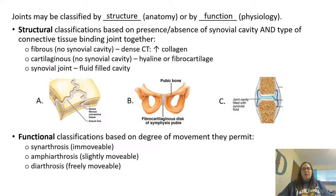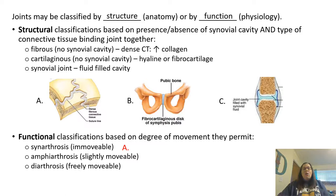Functional classifications are based on the degree of movement they permit. A synarthrosis joint is immovable — a fibrous joint tightly packed together is a synarthrosis. An amphiarthrosis joint is slightly movable, and the example would be the cartilaginous joint, which allows for a little bit of movement but not much. A diarthrosis type of joint is freely movable, and these are your synovial joints. So the structure is going to directly relate to the movement and function.